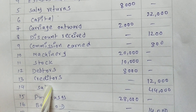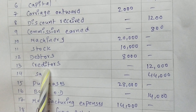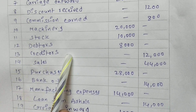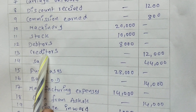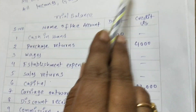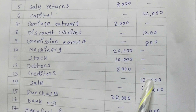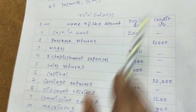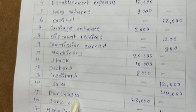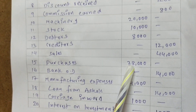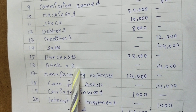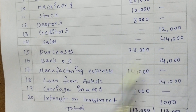Creditors — a creditor is the person or organization who gives debt to the company; in future the company has to pay this amount to them. Creditors are a liability, so all liabilities go on the credit side. Sales — sales is a gain, all gains go on the credit side. Purchases — purchases are expenditure, all expenses go on the debit side. Bank OD means bank overdraft — a bank loan is a liability, so all liabilities go on the credit side.